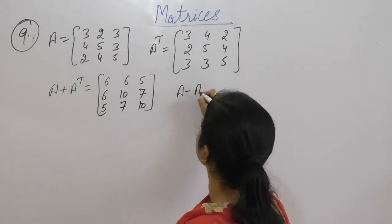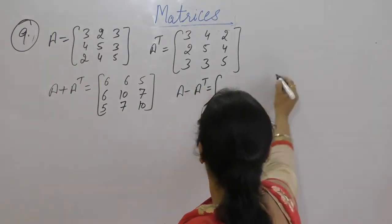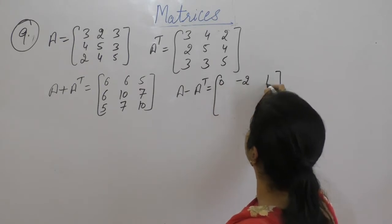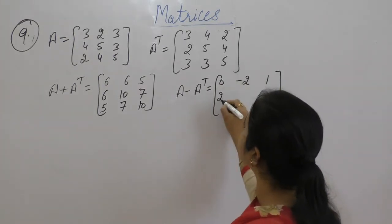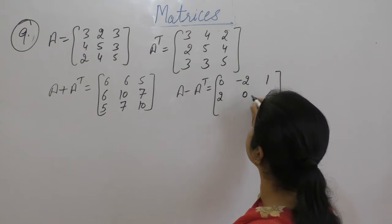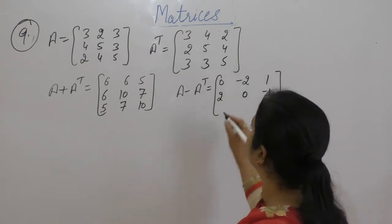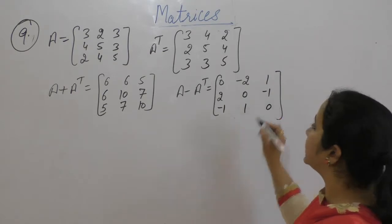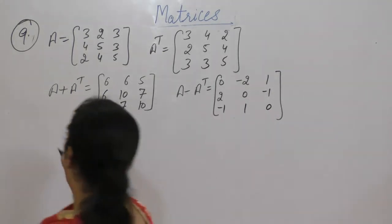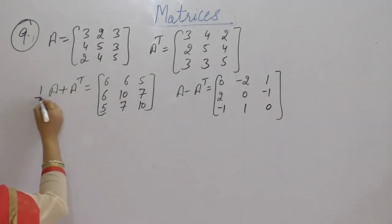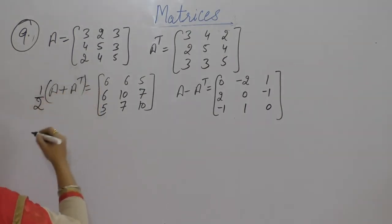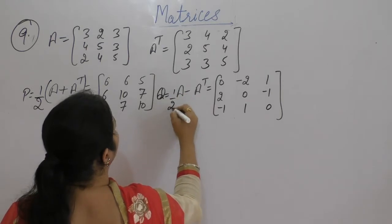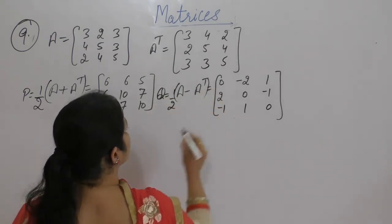For A minus A transpose, compute each element: 3-3, 2-4, 3-2; 4-2, 5-5, 3-4; 2-3, 4-3, 5-5. Let P equal half of A plus A transpose, and Q equal half of A minus A transpose.